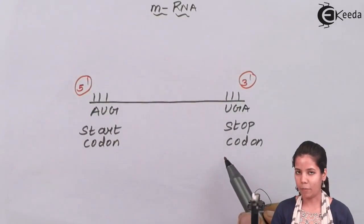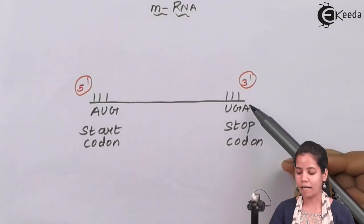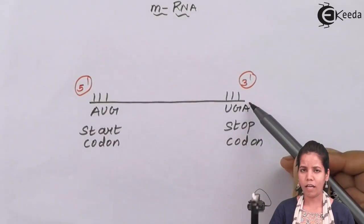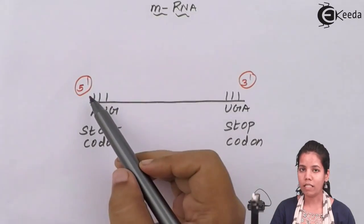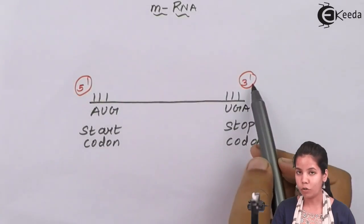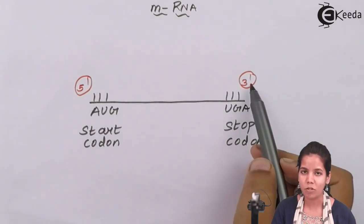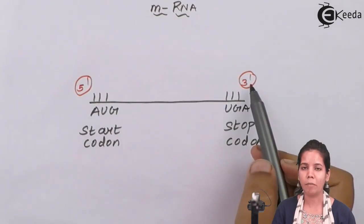As you can see in this diagram, this is the structure of mRNA or messenger RNA. mRNA is single-stranded. As you can see, it orients in the direction of 5' to 3'.